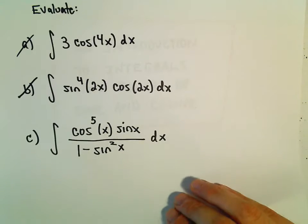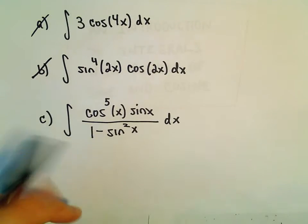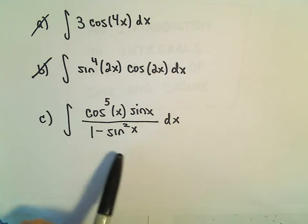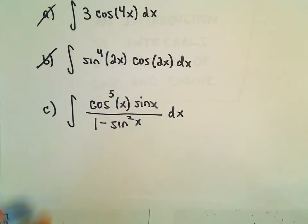So another example here involving some trig functions. We're going to integrate cosine to the fifth x times sine x over 1 minus sine squared x.